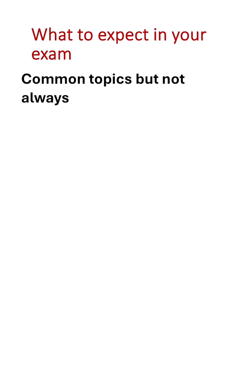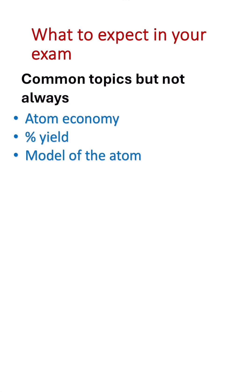There are also topics that are common but not always in the exam. Calculation of atom economy and percentage yield are quite common but not in every single exam — they were included last year. The model of the atom is also common but not in every exam, and it was in last year's paper. Finally, Mendeleev's table (the first periodic table) sometimes appears as a single question, so make sure you know the basics.